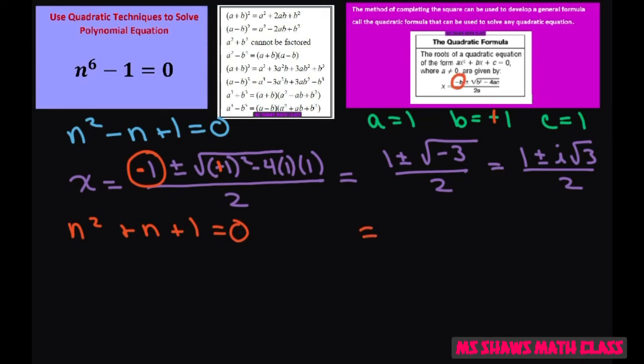So your other solution is going to be negative 1 plus or minus i square root of 3 divided by 2.